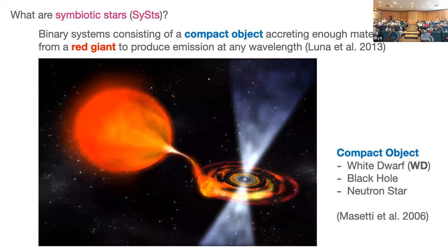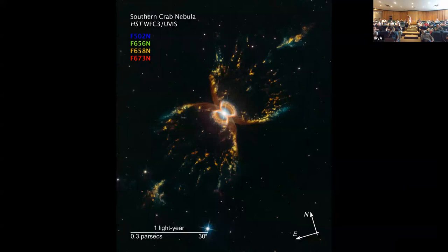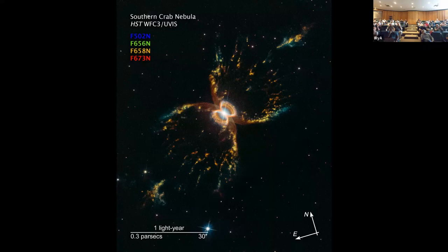The white dwarf or accretion object produces an accretion disk and some bipolar ejection, so we can see these marvelous images. This is why I study symbiotic stars. This is one taken with HST of the Southern Crab Nebula, which is accepted to be a symbiotic star but hasn't been confirmed. You can see this amazing hourglass structure, and very likely two jets expanding perpendicular to it.